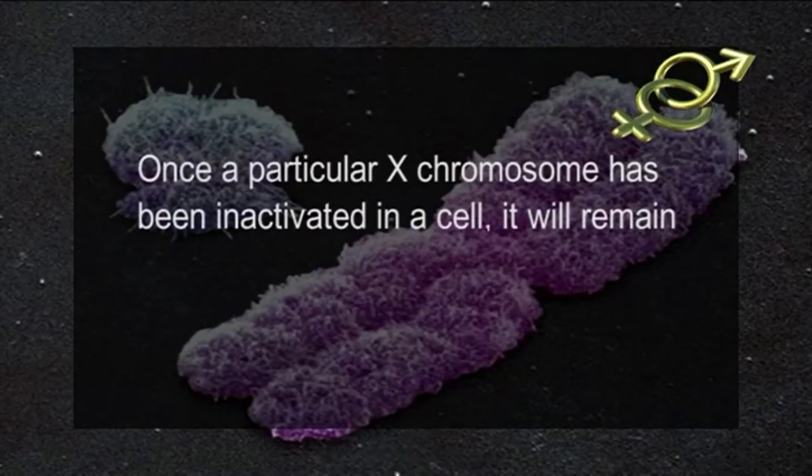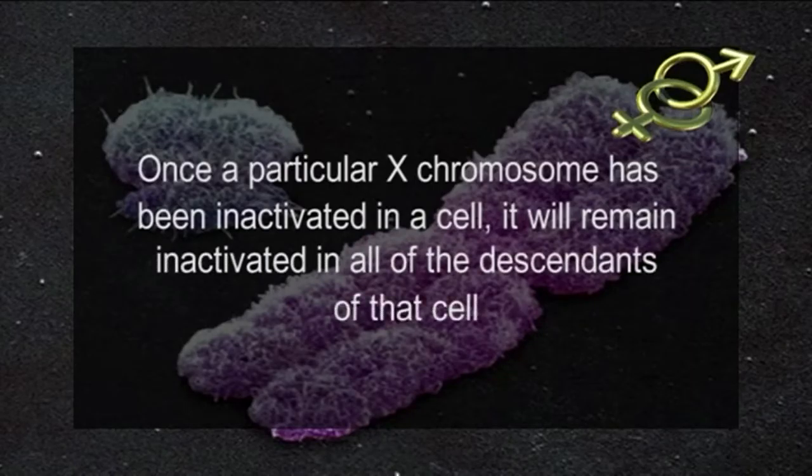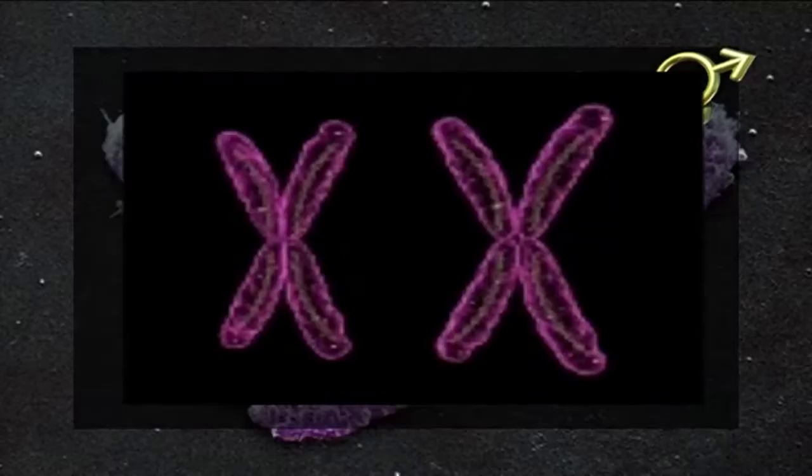The inactivation of an X chromosome in the cells of a developing female embryo occurs randomly, so that about half of the cells express the genes in one X chromosome and half express the genes in the other X chromosome. Once a particular X chromosome has been inactivated in a cell, it will remain inactivated in all of the descendants of that cell. If a female mammal has different forms or alleles of a particular gene on each of her two X chromosomes, then about half of her cells will express one of the alleles and about half the other allele.